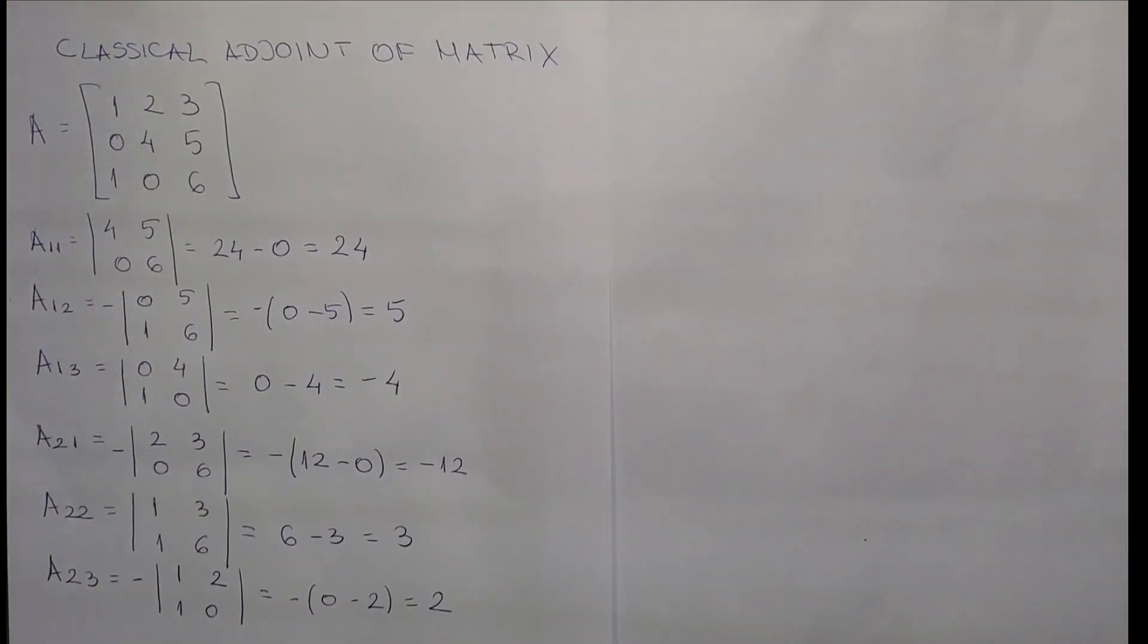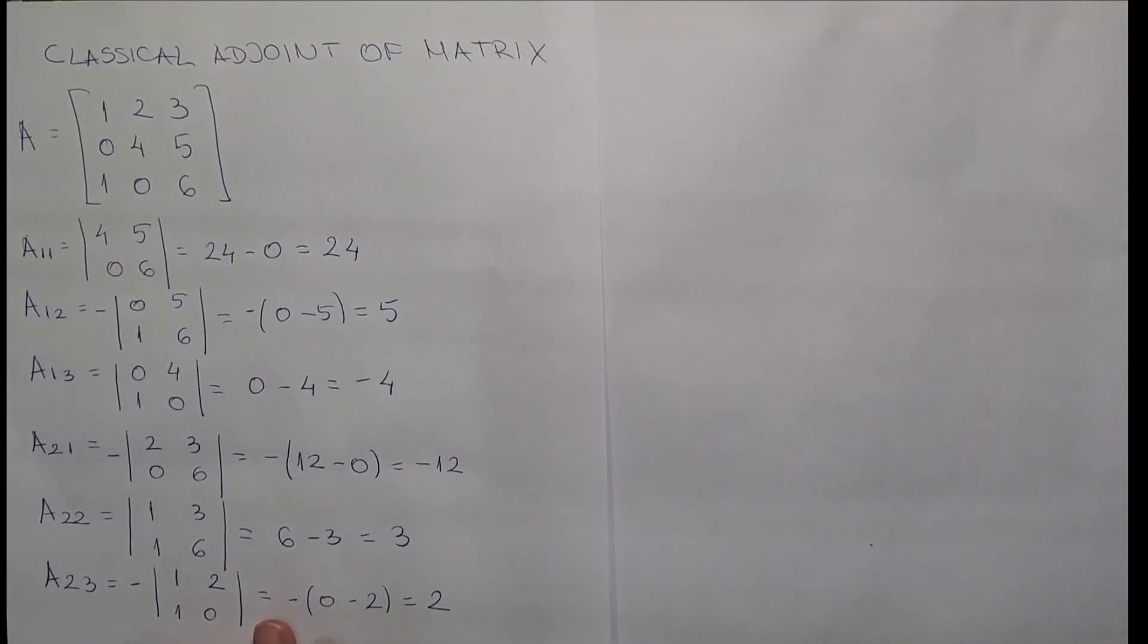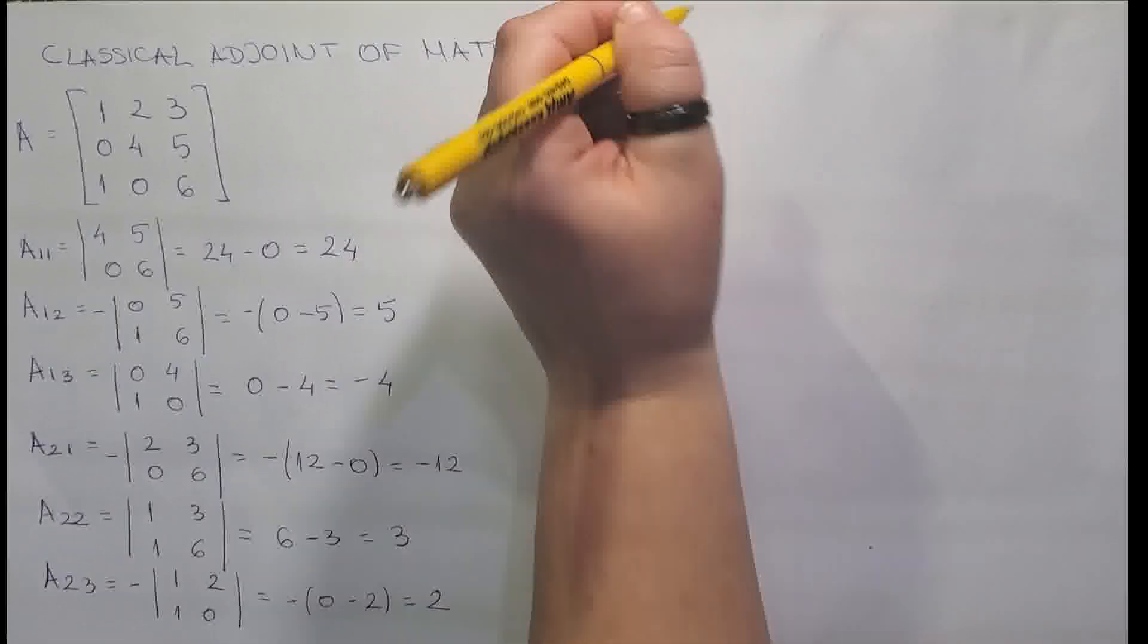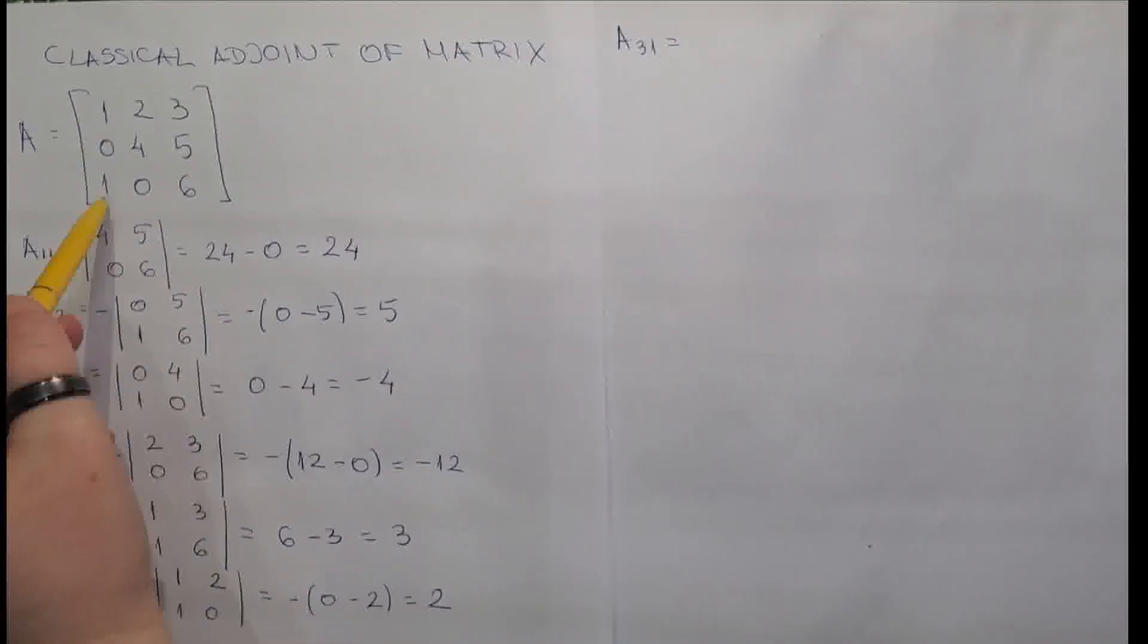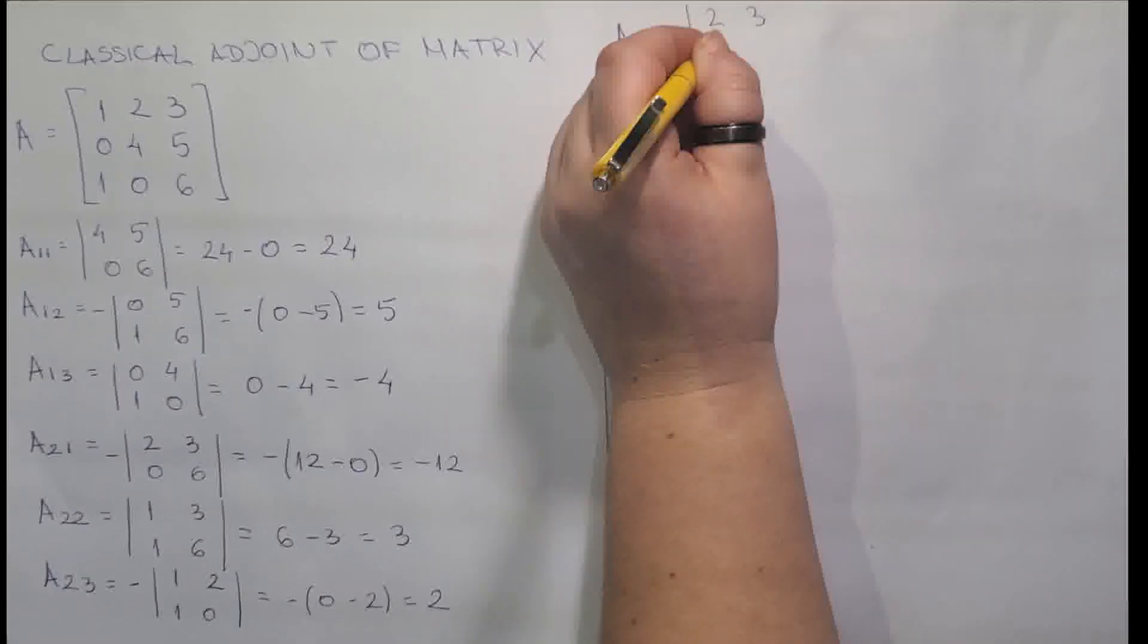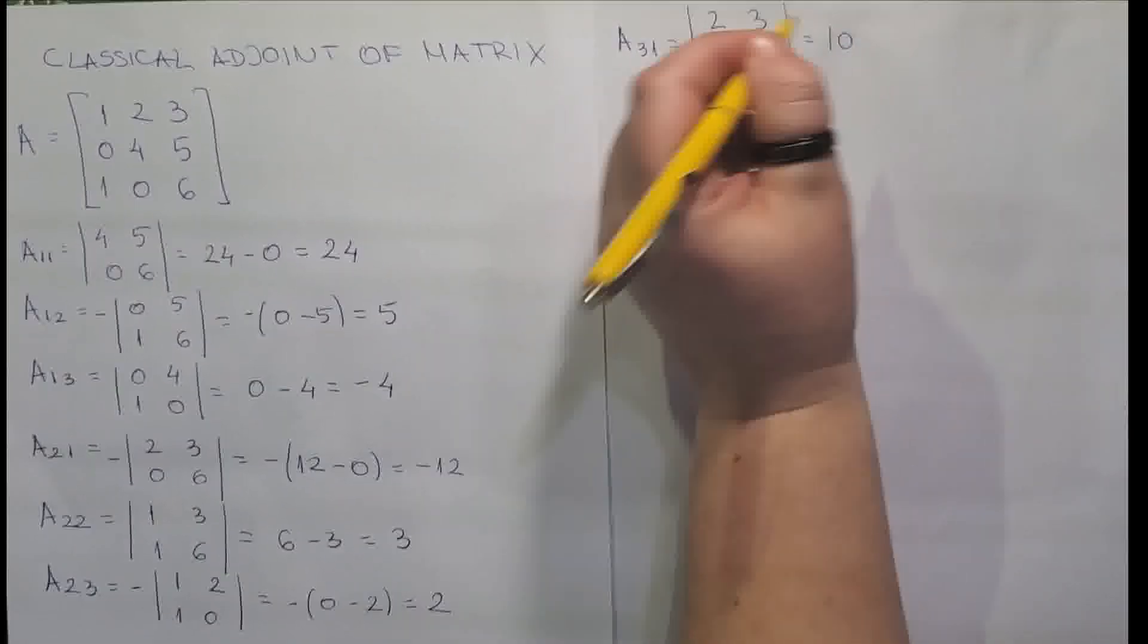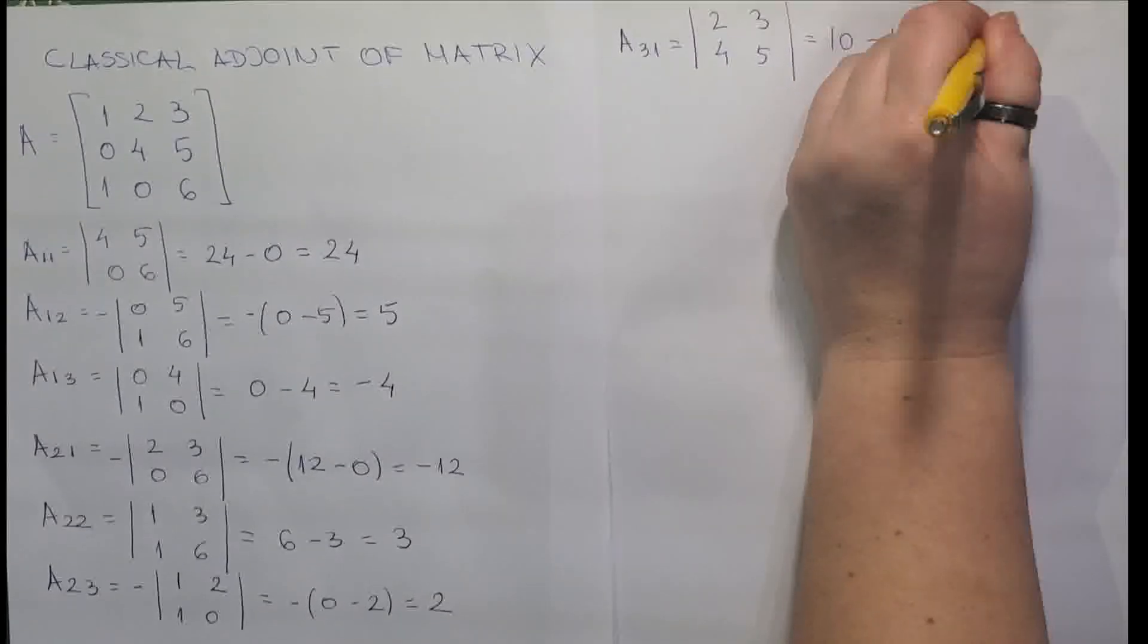Now for the last section, for the last three elements, we have a31. So for this one, we are eliminating row number 3 and column number 1. So we have 2, 3, 4, 5. Now we need to solve the determinant. 2 by 5 is 10, minus 12. This one is equal to minus 2.